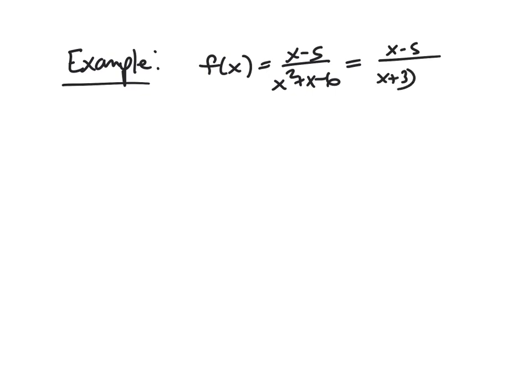So we should first factor this. And this is x plus 3 times x minus 2. So we're going to go ahead and look at x equals negative 3 and x equals 2 and the limits there.